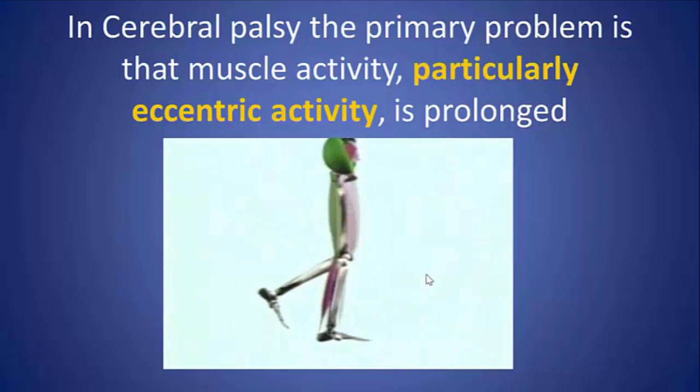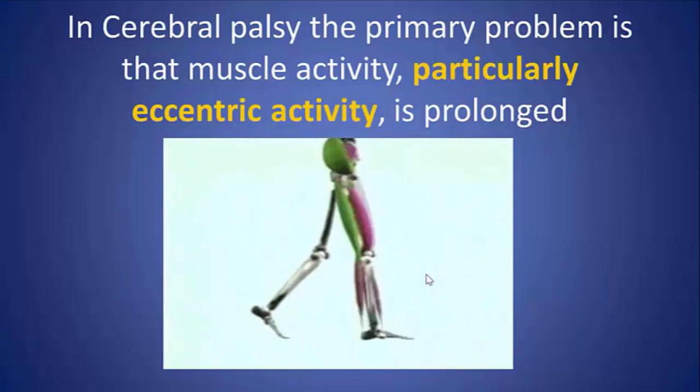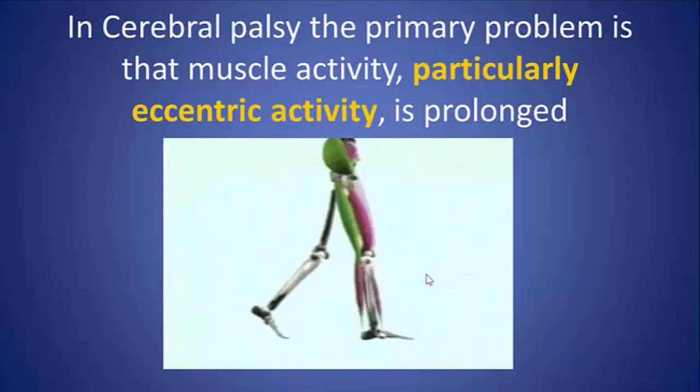In cerebral palsy, which is a concern for many watching this, the primary problem is that muscle activity — particularly eccentric activity — is excessive and prolonged. This interferes with the normal orchestration of muscle function which allows us to walk.